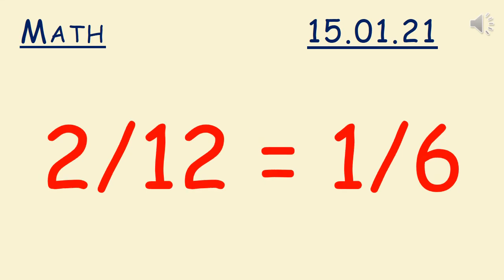So you should have got 1/6. That's because the largest common factor is two. Two is in the two times table and two is in the twelve times table. So how many twos are in two? One. And how many twos are in twelve? Six. That gives us the simplified version of the fraction 1/6.